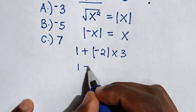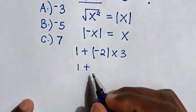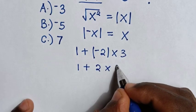Then, it will be 1 plus negative 2 absolute. Because of absolute, negative 2 will be positive 2, then times 3.